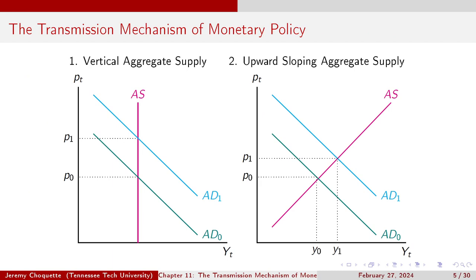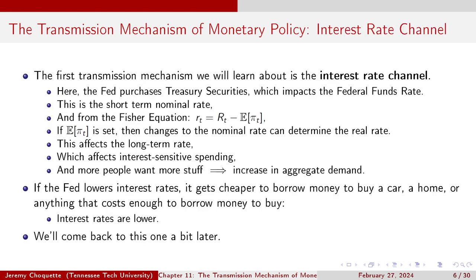We're interested in how aggregate demand is moving and what's causing it to shift — that is the actual transmission mechanism of monetary policy. The first one is the interest rate channel. The Fed purchases treasury securities, which has an impact on the federal funds rate, a short-term nominal interest rate. From the Fisher equation, where the real interest rate equals the nominal rate minus expected inflation, if expected inflation is set, changes to the nominal rate determine the real rate. This also affects long-term interest rates, which affects interest-sensitive spending, and ultimately more people want more stuff — increase in aggregate demand.